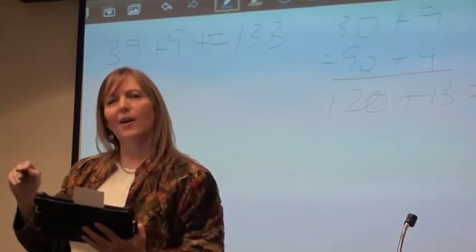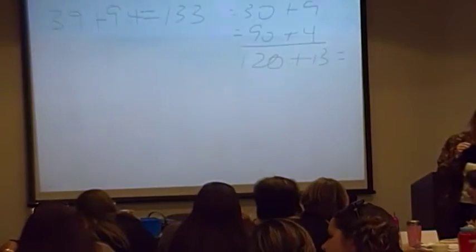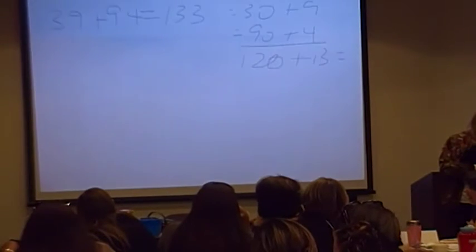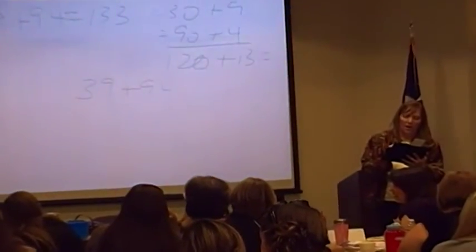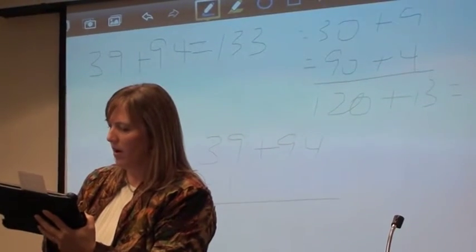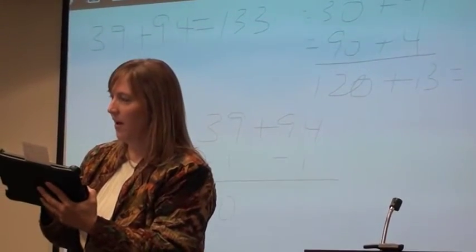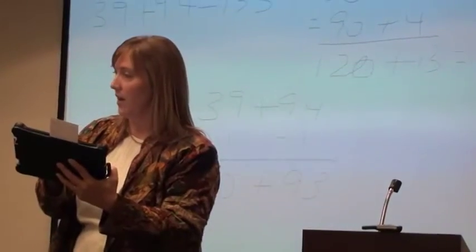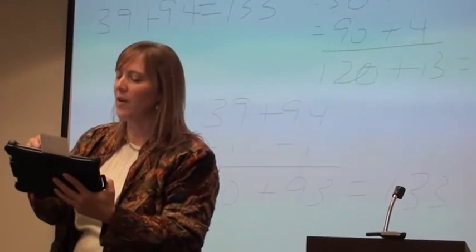What did you say that was? 133. Then I heard a conversation right here. Could you tell me what you did? I made the 39 into 40 and then 94 into 93 and then I added it. You made the 39 a 40. So to do that, you had to give it one. Yes. And then why did you make the 94 a 93? Because I took one from that. Did you grab one from the 94 to give it to the 39? And so you ended up with 40 and 93. And was that easier for you to add? Yeah. What is 40 and 93? Hey, check it out. It's 133. Very nice. Excellent strategy.